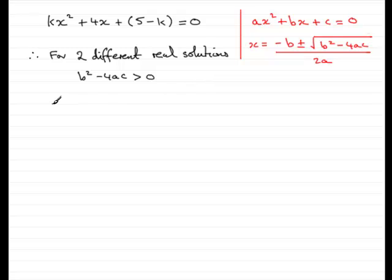Now, what have we got for a? Well, a is the coefficient of x squared, which in this example is k.